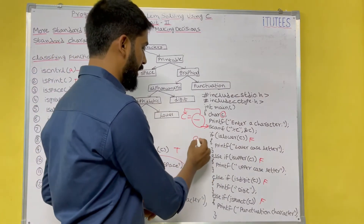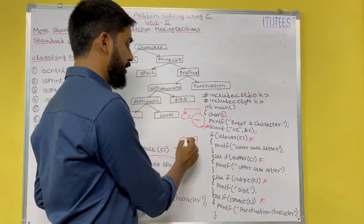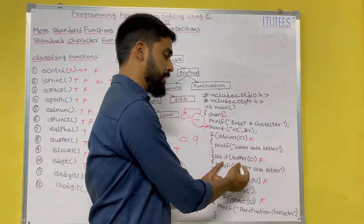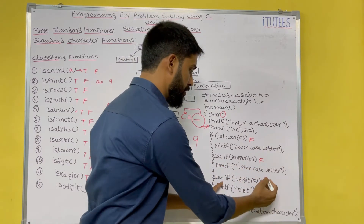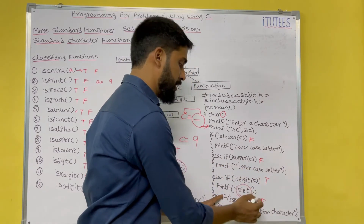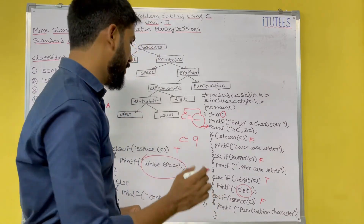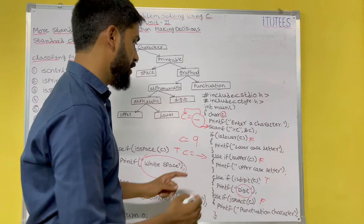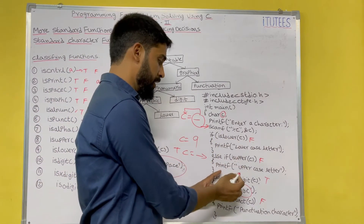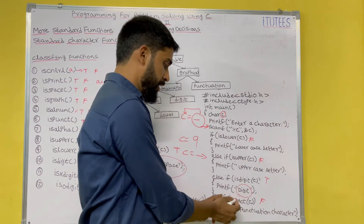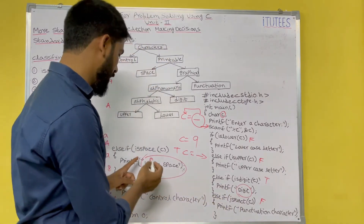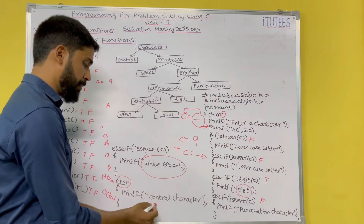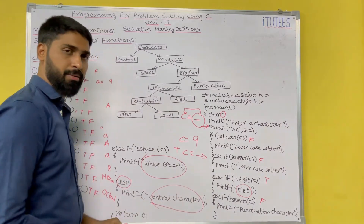If I enter 9, c equals 9. If islower is false, isupper is false, isdigit is true — so we print digit. For example, c equals arrow button. Now, islower is false, isupper is false, isdigit is false, ispunct is false, isspace is false. Then we have only else — that means it is a control character.